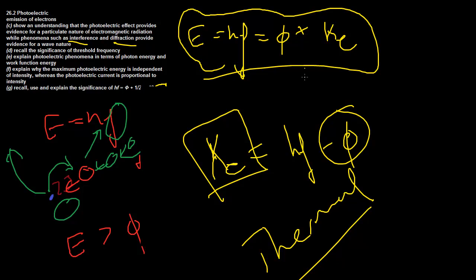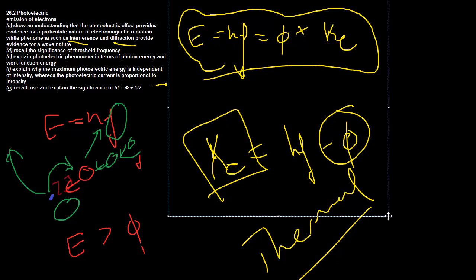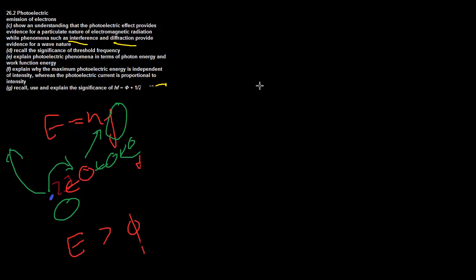How do they measure how much energy an electron has gained? It's really hard to see an electron going past — you can't use light gates on it. So this is how they set up a simple photoelectric circuit.